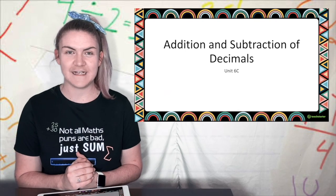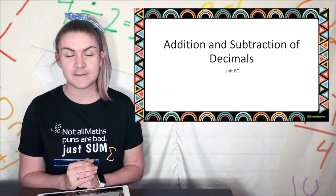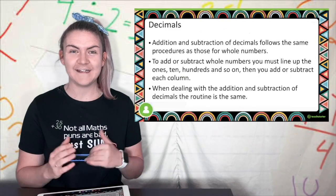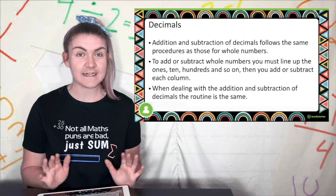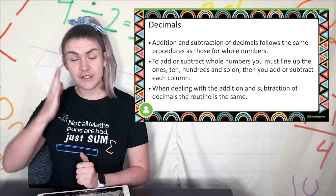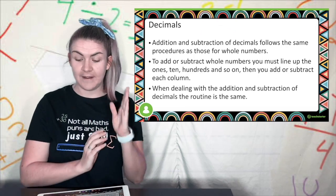Now we're going to look at decimals and we're going to start with addition and subtraction of decimals which should be kind of like a recap. When we add and subtract decimals it follows the exact same procedure as when we add and subtract whole numbers. When we're adding and subtracting whole numbers we just line up the place values.